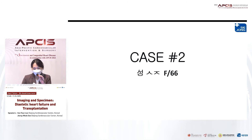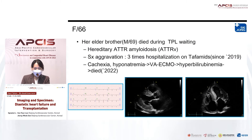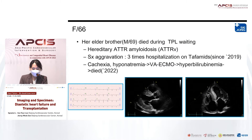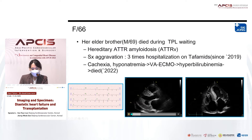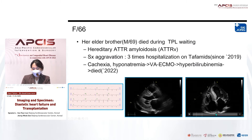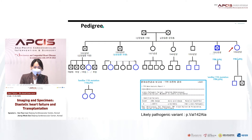Let's talk about case two. This is a 66-year-old female. Her elder brother died while waiting for transplantation; he was diagnosed with hereditary ATTR amyloidosis. He experienced three hospital admissions for atrial fibrillation, and cachexia and hyponatremia were persistent. VA ECMO was inserted, but he died. His EKG showed a pseudo-infarct pattern and low voltage. On parasternal long axis view, a ground-glass sparkling pattern was revealed in the LV septum, and the LV septum and free wall were very thickened. LV function was very severely decreased, with global hypokinesis.